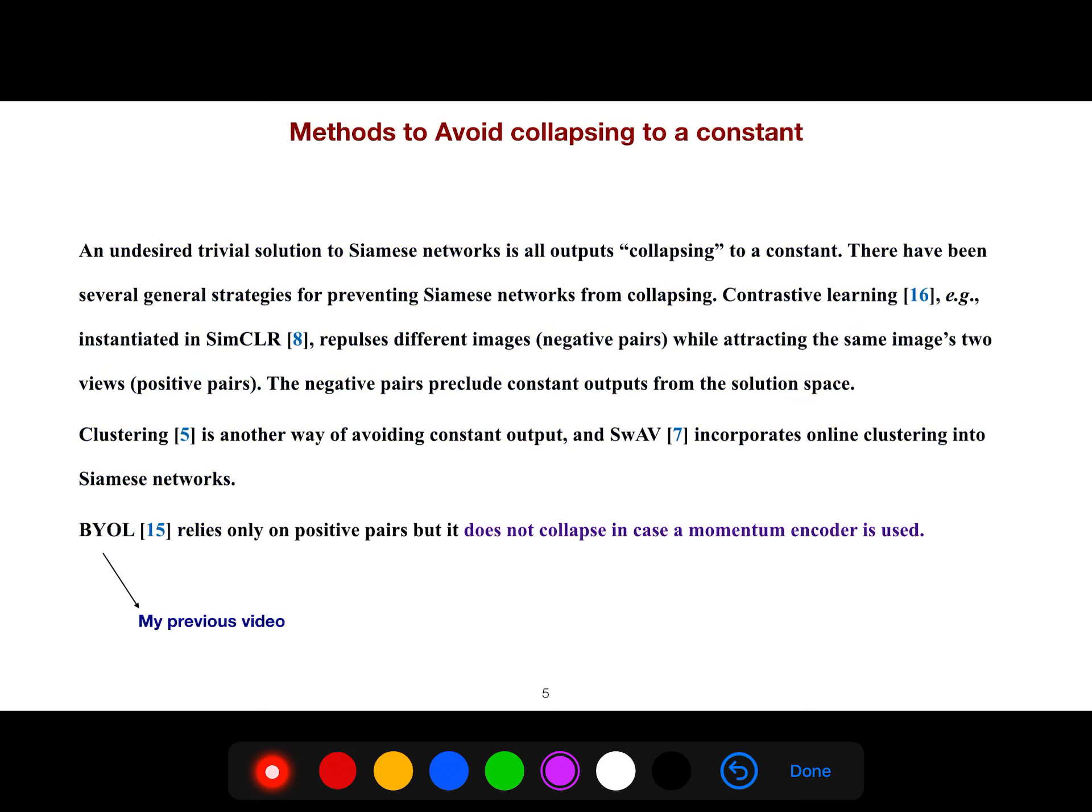An undesired trivial solution to Siamese networks is all outputs collapsing to a constant. There have been several general strategies for preventing Siamese networks from collapsing. Contrastive learning instantiated in SimCLR repulses different images while attracting the same image's two views. The negative pairs preclude constant outputs from the solution space.